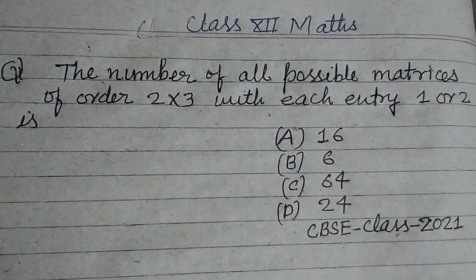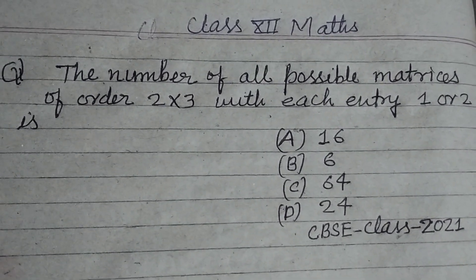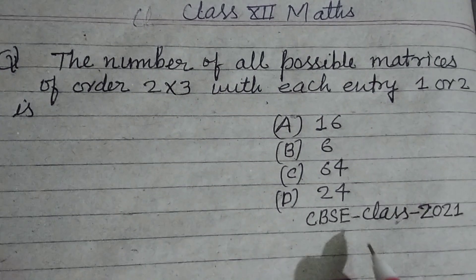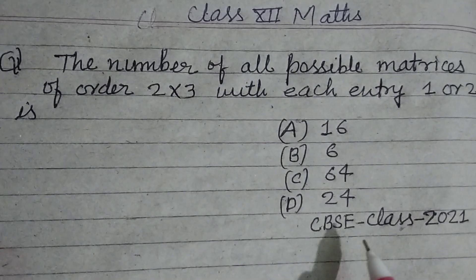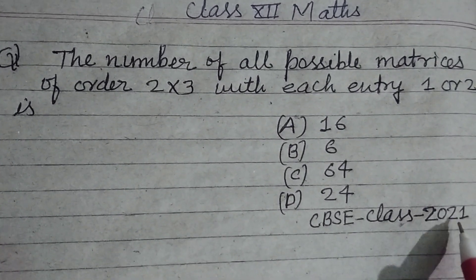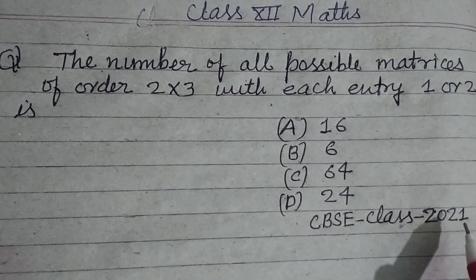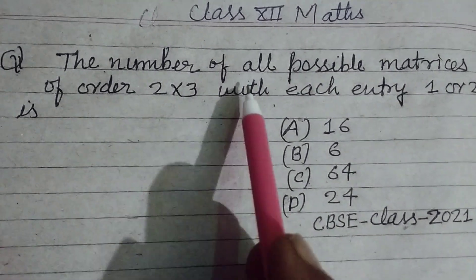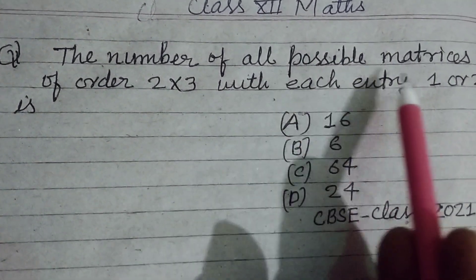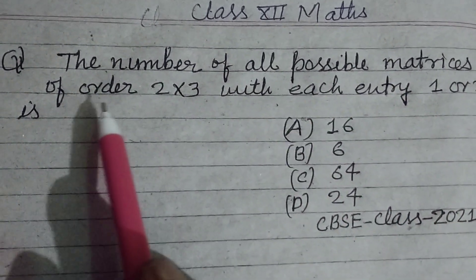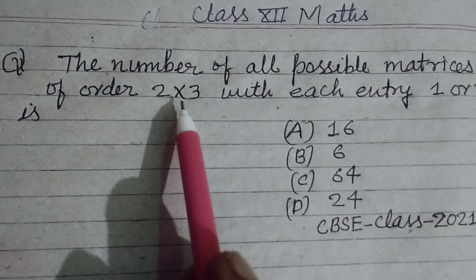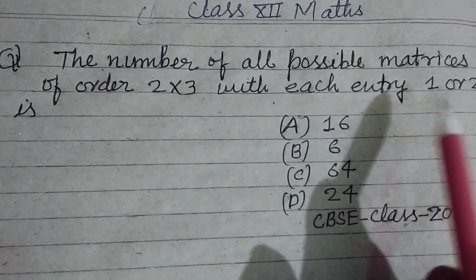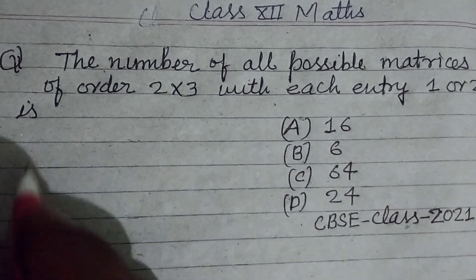Hello students, warm welcome to this YouTube channel. This is a question from CBSE class 12, 2020 board exam. The number of all possible matrices of order 2 by 3 with each entry 1 or 2 is?